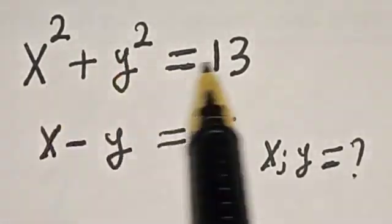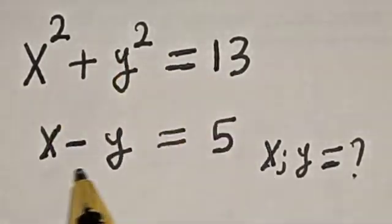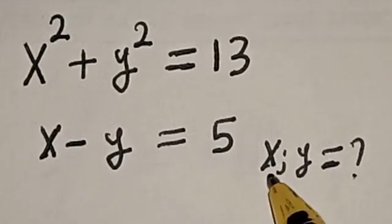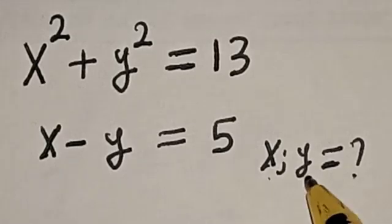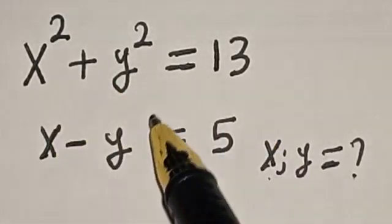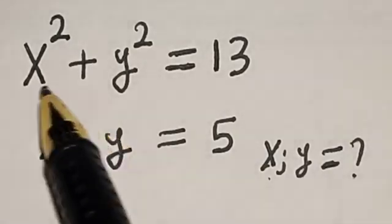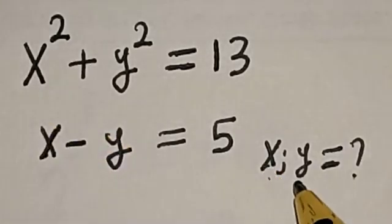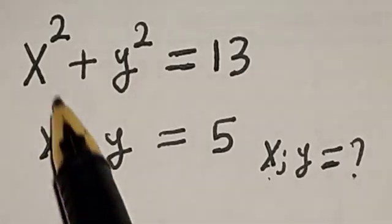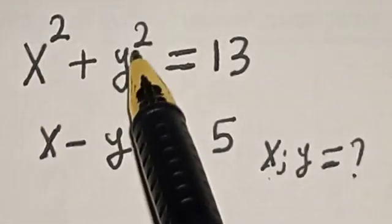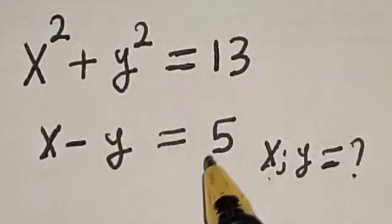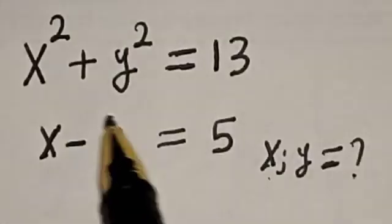x squared plus y squared is equal to 13, x minus y is equal to 5. What is the value of x and what is the value of y? Hi everyone, welcome to my class. In this class we want to find the value of x and also the value of y from this given equation: x squared plus y squared is equal to 13, and x minus y is equal to 5.